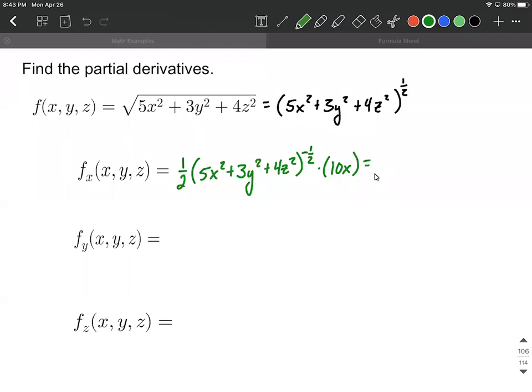We may clean this up just slightly by saying 10x multiplied by the one-half out in front makes 5x, and then just copy down everything that's on the inside of our parentheses raised to that exponent.